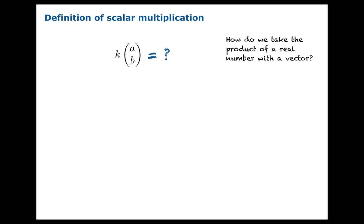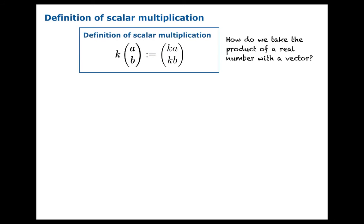Here's another important operation: scalar multiplication. How do we take the product of a real number k with a vector given in component form a, b? Perhaps a more important question is why would you want to do such a thing — we'll see that in a second. The definition: you multiply each component by the same scalar and reassemble into a vector. It's a way of taking a real number, multiplying it by a vector, and getting a new vector.